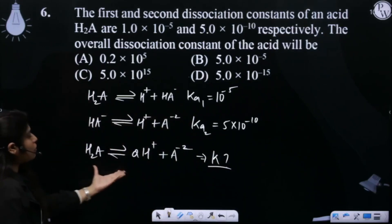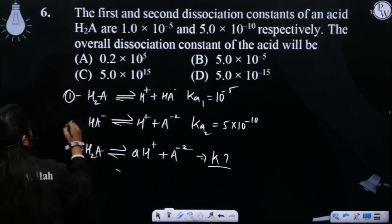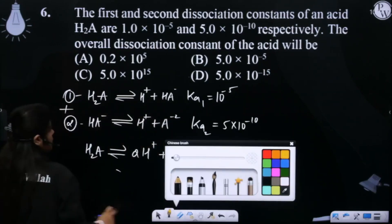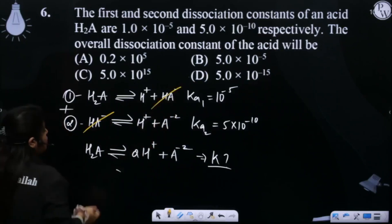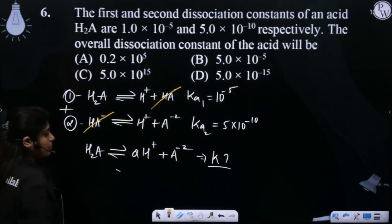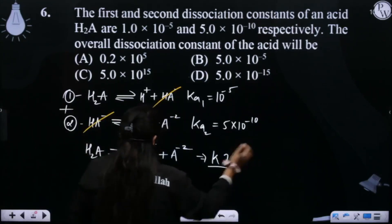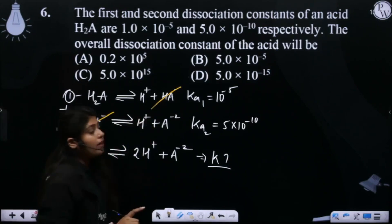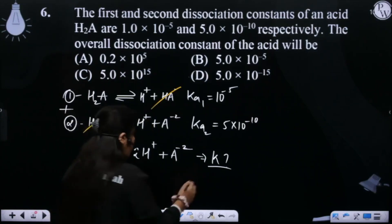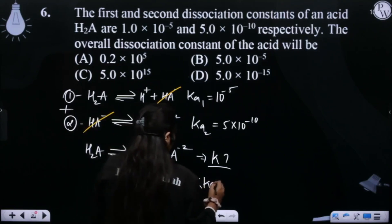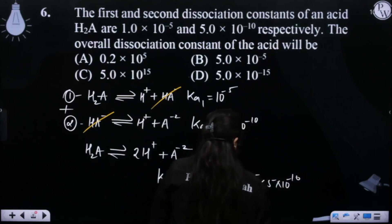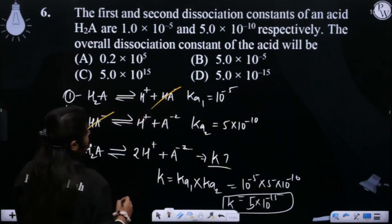We arrange the first and second reactions to get the overall third reaction: H₂A → 2H⁺ + A²⁻. If we add the first and second reactions, the overall dissociation constant is Ka1 × Ka2, which is 10⁻⁵ multiplied by 5 × 10⁻¹⁰, giving 5 × 10⁻¹⁵. This is our overall dissociation constant.